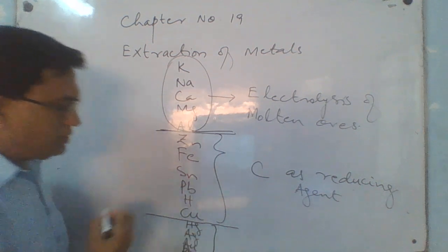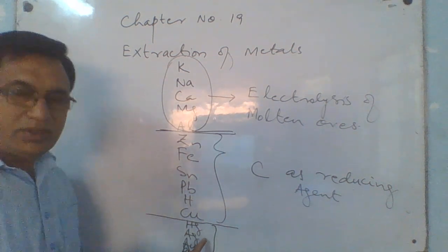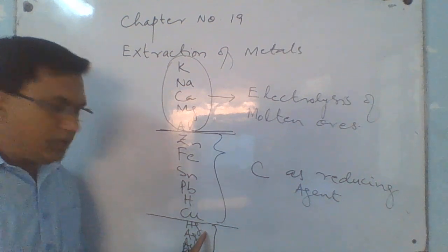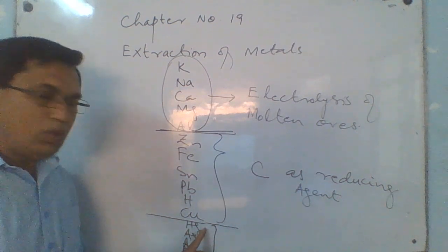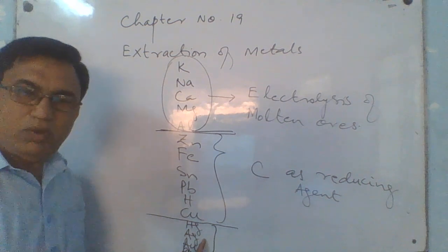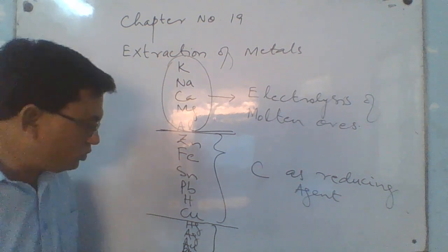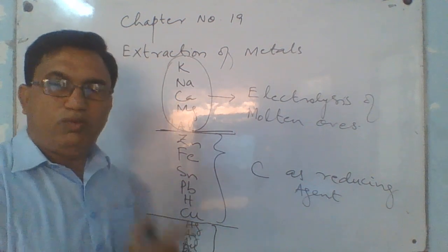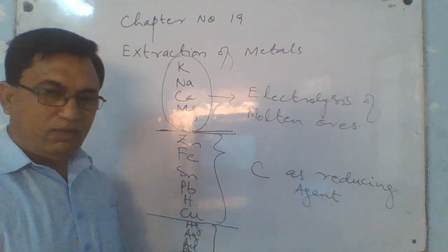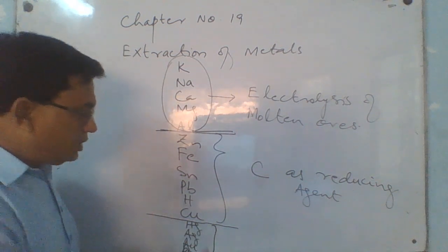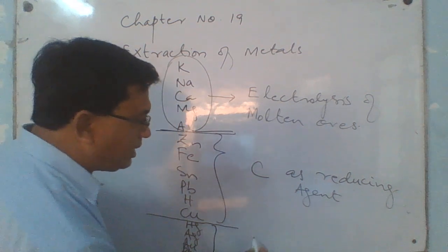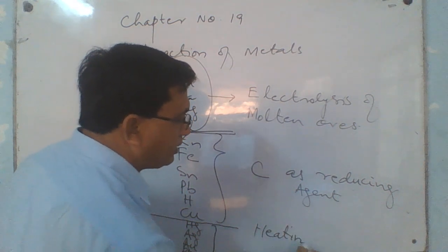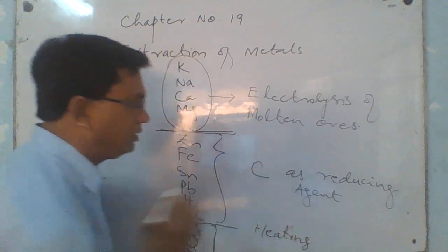The rest of these metals — copper, mercury, silver, gold, platinum — are the least reactive metals. As you know, these metals don't react with cold water, with steam, or with dilute acids. That's why their reduction potential is very high, so these can only be reduced by simple heating.